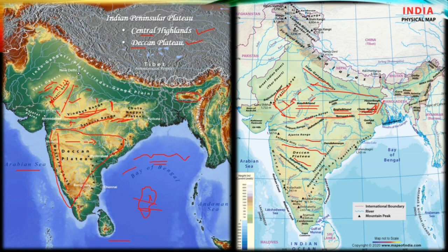The extension of this plateau can also be seen in the northeast, known as the Meghalaya and Karbi Anglong Plateau. It is separated from the Chota Nagpur Plateau due to a fault. There are three prominent hills running west to east: Garo, Khasi, and Jaintia.